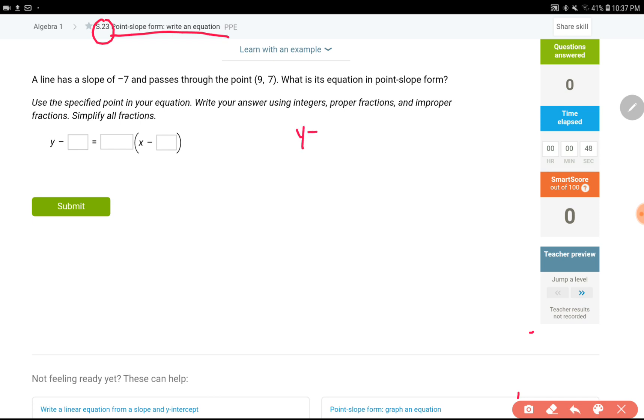Y minus y1 equals m times x minus x1, that's point slope form.